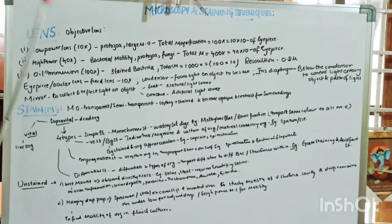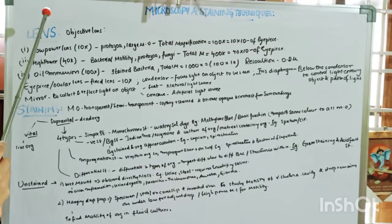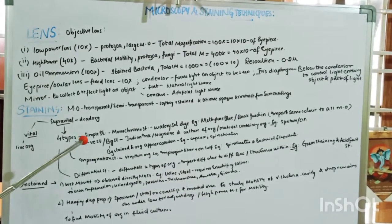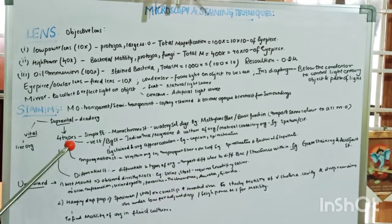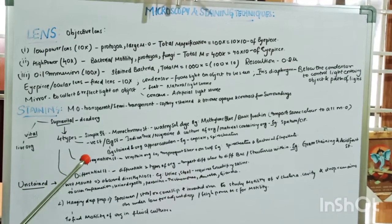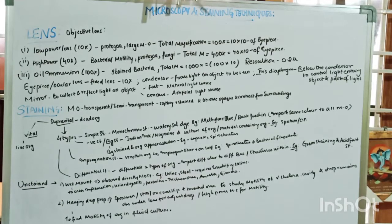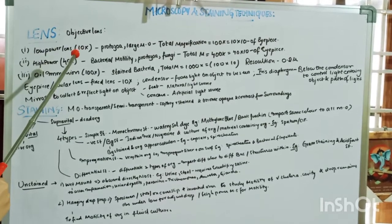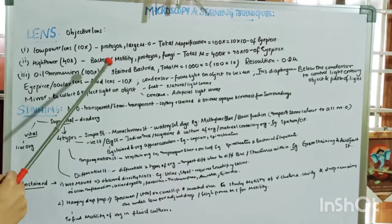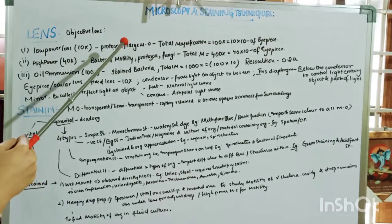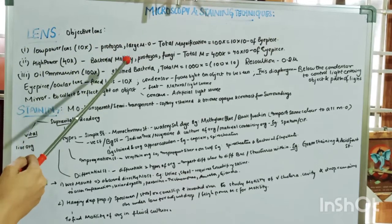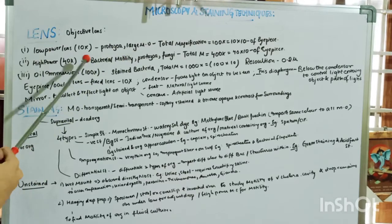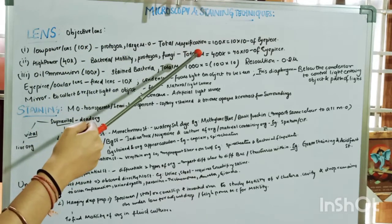Now let's look at the parts of the microscope. There are two types of lenses: the objective lens and the ocular lens. The ocular lens is what we look through — where we place our eye. The objective lenses are divided into three types: the low power lens, the high power lens, and the oil immersion lens. The low power lens has 10x magnification.